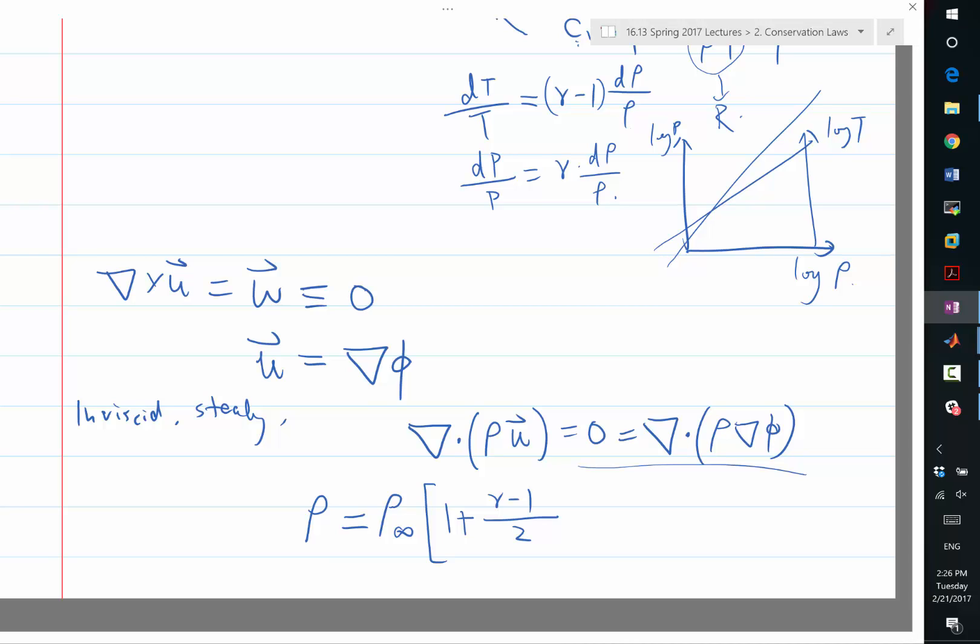And the Mach number is a function of phi also. So basically we have the Mach number in terms of 1 divided by V infinity squared times the magnitude of grad phi squared, which is the velocity squared. And the density scales with this factor to 1 over gamma minus 1 power. So these two equations - the primary equation is an equation that looks like Laplace's equation, where the coefficient itself is a function of the gradient of phi. This is called the full potential equation.